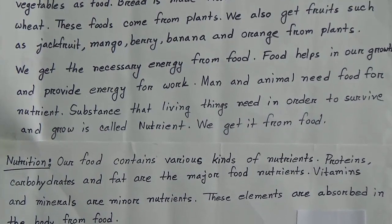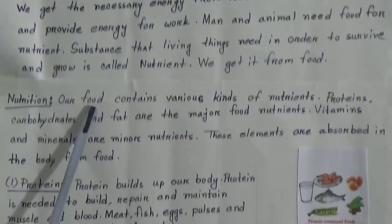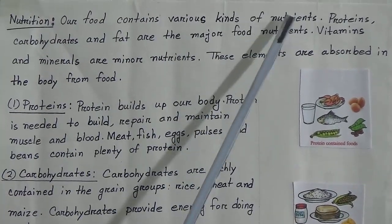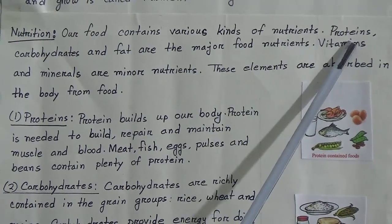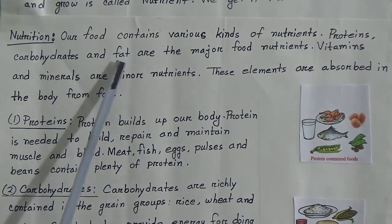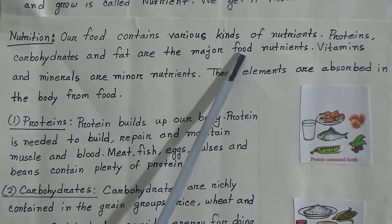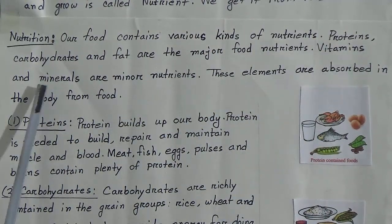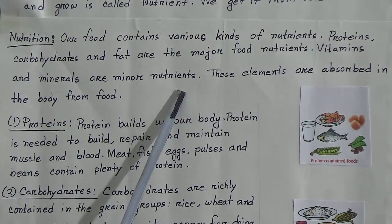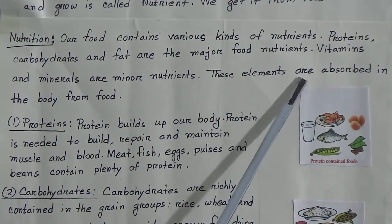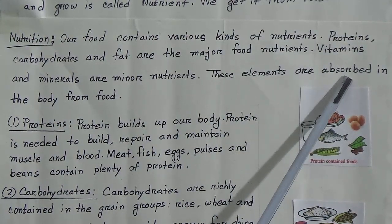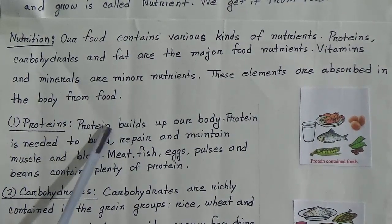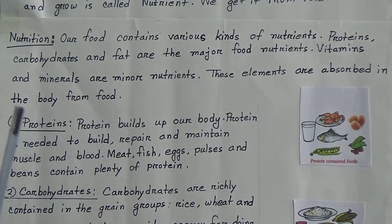What is a nutrient? Our food contains various kinds of nutrients. Proteins, carbohydrates, and fat are the major food nutrients. Vitamins and minerals are minor nutrients. These elements are absorbed in the body from food. Now we will learn about protein.